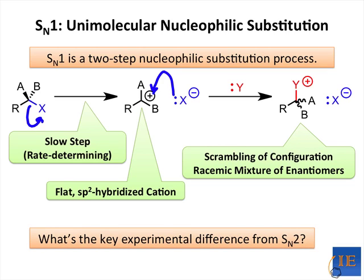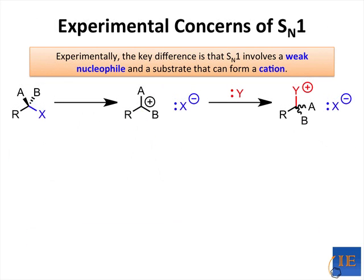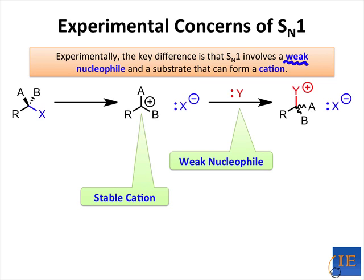We've discussed some important mechanistic differences, but how do we know which mechanism is operating, given nothing but reaction conditions and a substrate? The key experimental difference is the presence of a weak rather than a strong nucleophile in the reaction conditions. Because the nucleophile is weak, it's unable to push off the substrate's leaving group, and thus that group has to depart on its own. That requirement brings its own set of problems, however.